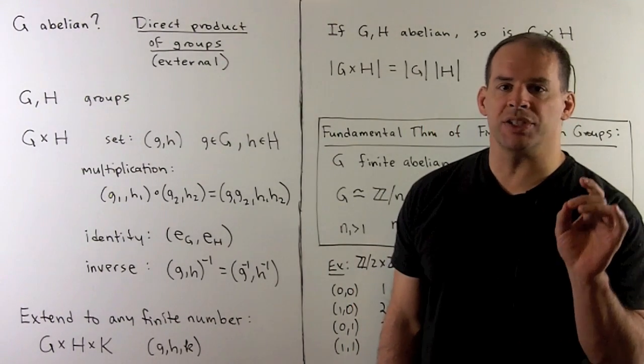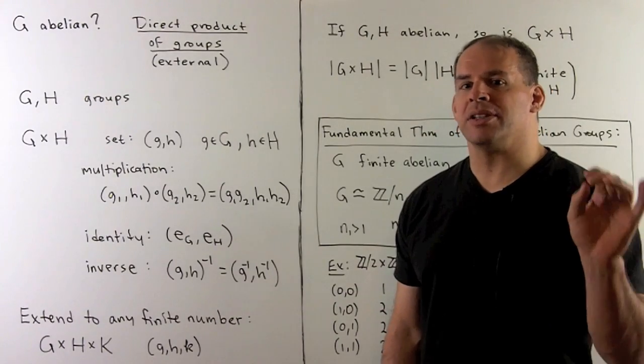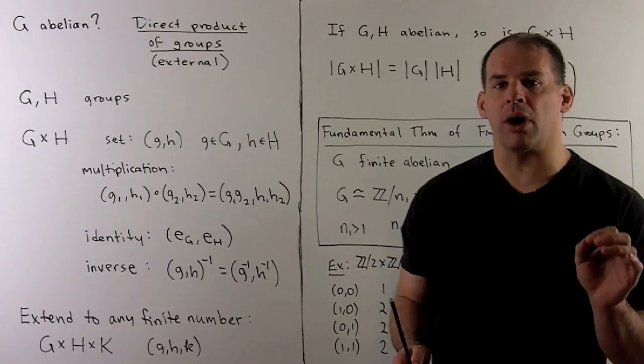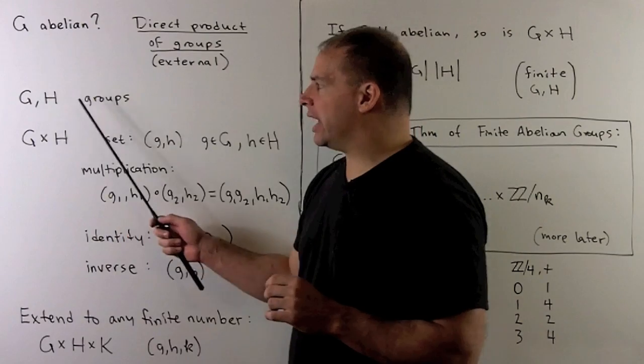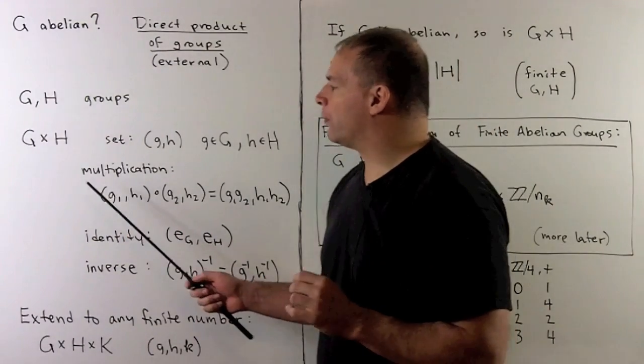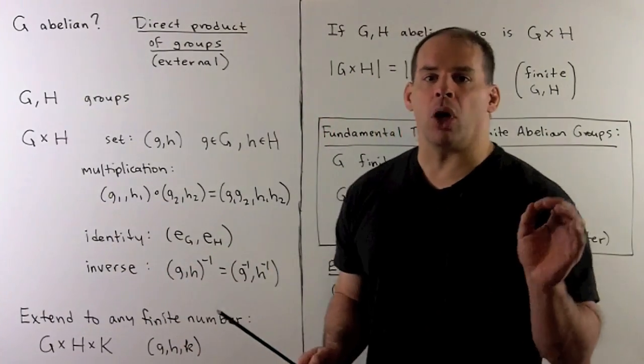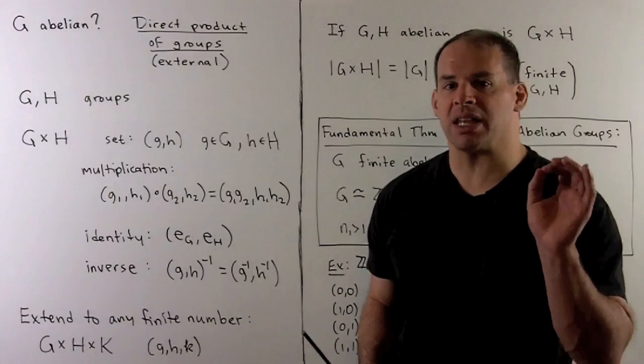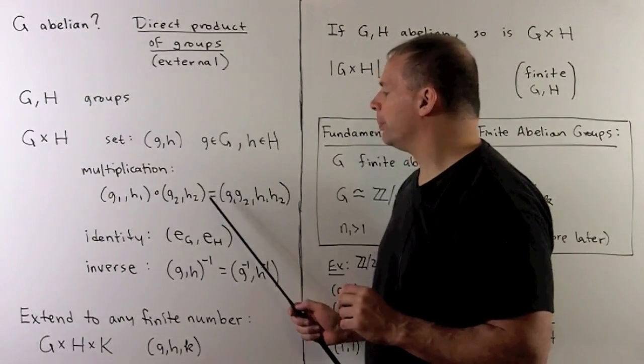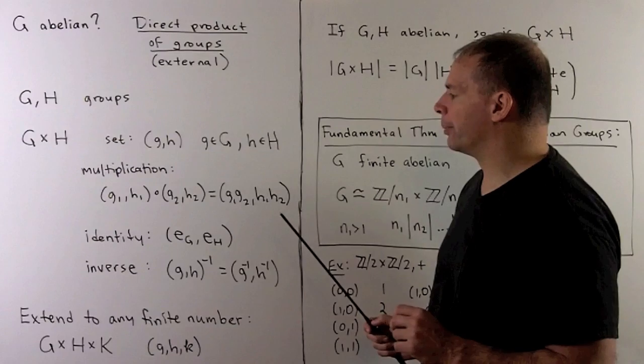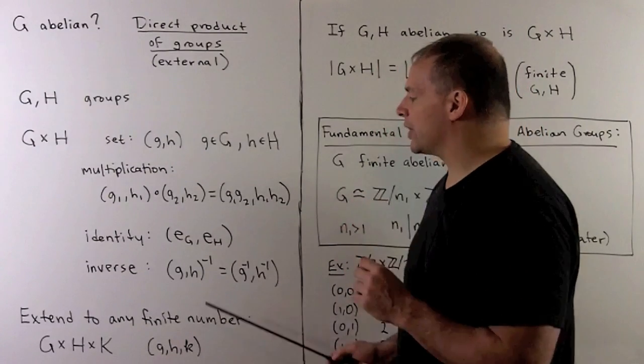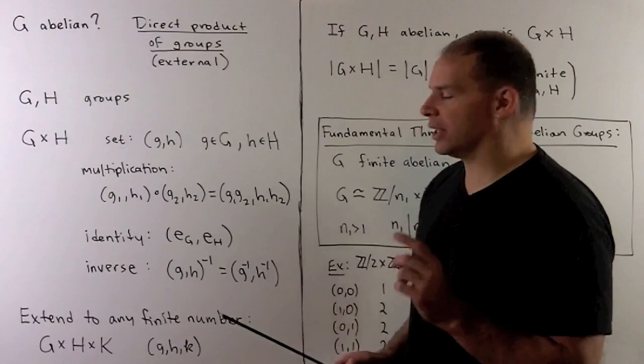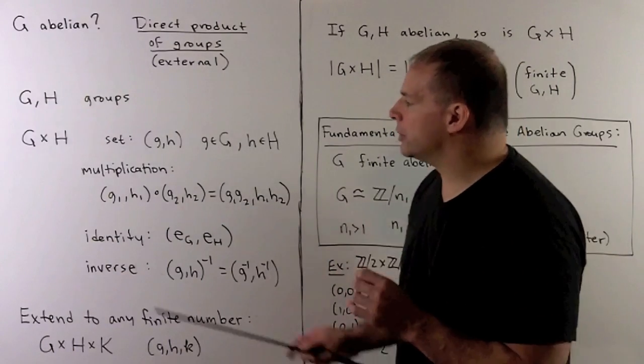Now, do we have options when G is abelian? Not only do we have an option, this option is the punchline for finite abelian groups. This is going to be a direct product of groups - in this case, the external direct product. I'll have G and H groups, not necessarily abelian. We'll form the direct product G cross H. The set will be all ordered pairs (g,h) where g is in G, h is in H. For multiplication, we multiply slot-wise, so (g1,h1) times (g2,h2) is (g1g2, h1h2). For the identity element, we use identity for G comma identity for H. And for inverses, (g,h) inverse equals (g inverse, h inverse).